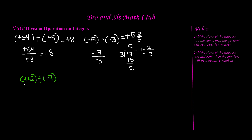We're still going to do division and write this in fraction form. Positive 42 divided by negative 7 — we know that 7 goes into 42 six times, so our answer will be 6. But since the quotient will be a negative number, and we know the sign for a negative number is a minus sign, positive 42 divided by negative 7 equals negative 6.